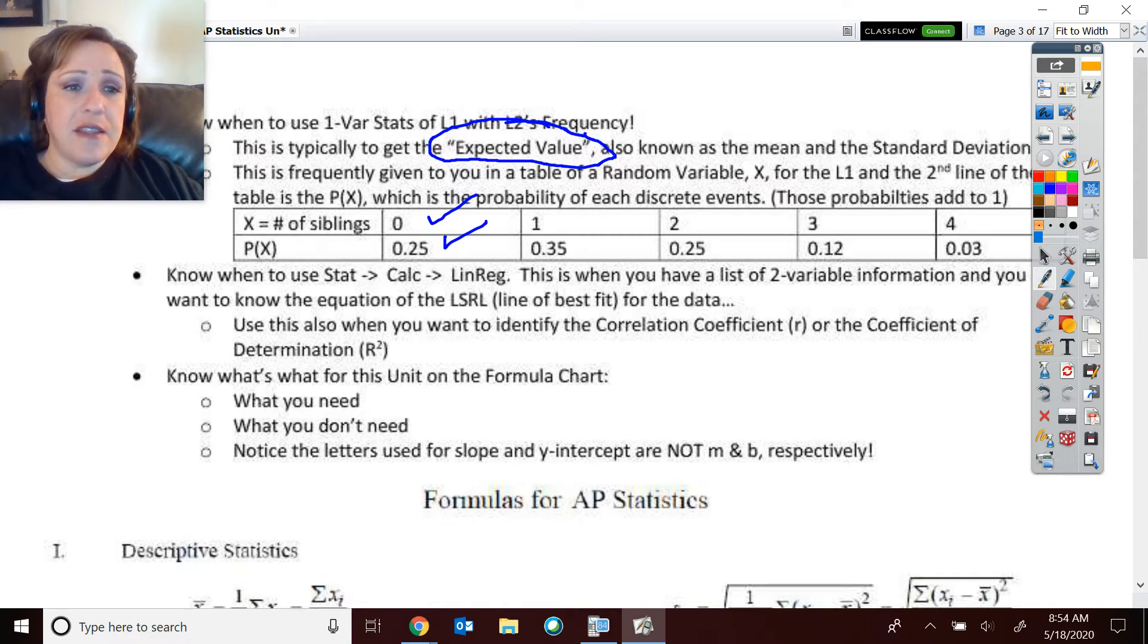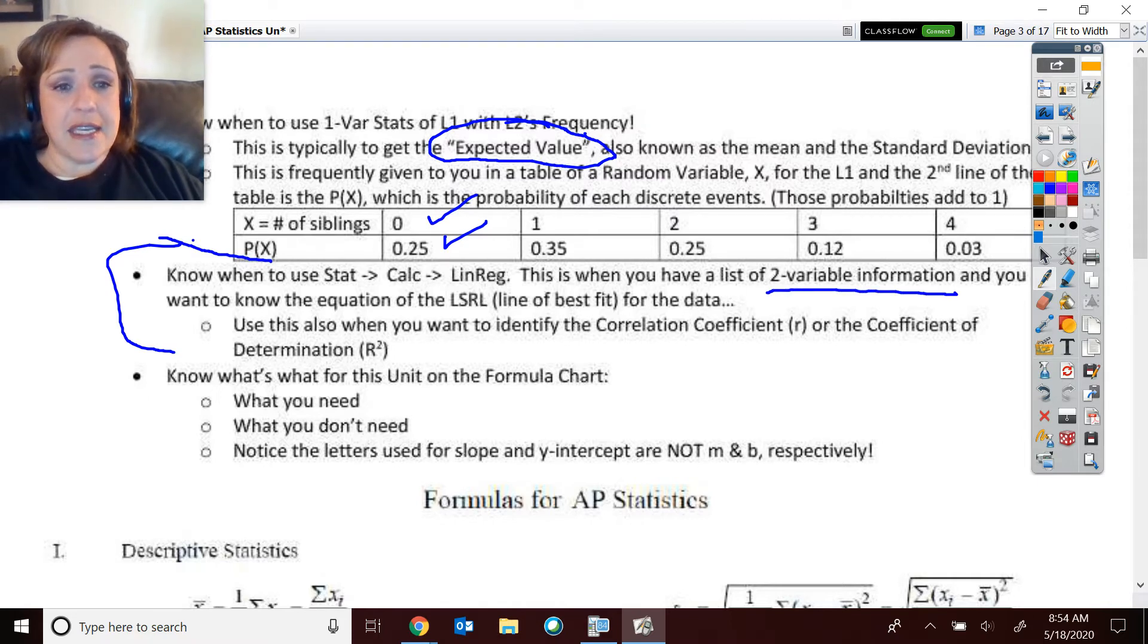Expected value is the mean. But what if we had this? So this is the number of siblings and the proportion of the population that have those. So that's these list one pieces of data with list two's frequency. So know when to use, so then we would do L1 with L2's frequency. Then the third item is what if they ask you, now this would not be the case here because this is a list of one set of data and their frequency. But if we had two separate variables of information, like age of the student and the number of siblings, see, that's two separate variables. Then, and we were asked if there's a linear relationship between those, then we would do stat, calc, lin reg, and that would then give us the least squares regression line, your R and your R squared, making sure that your stat diagnostics are on.